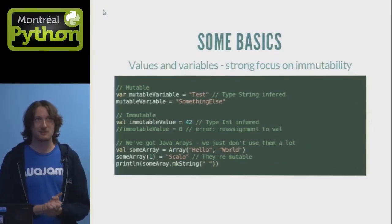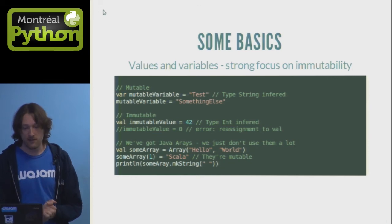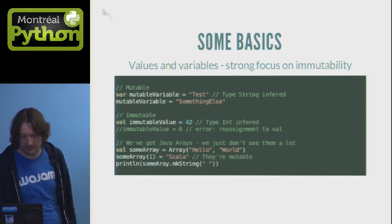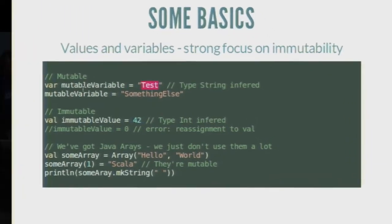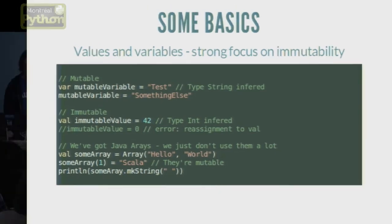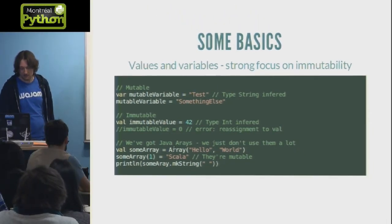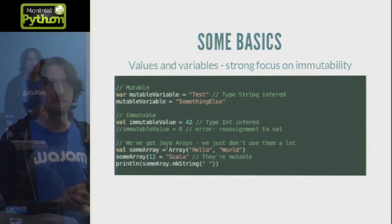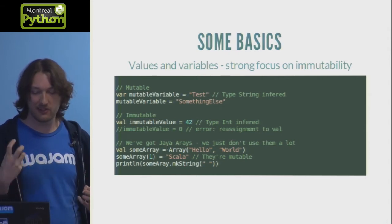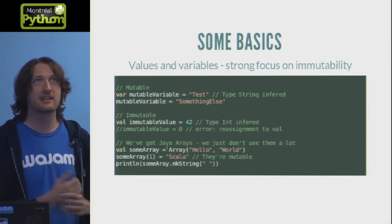Starting with some basic stuff — values and variables. There are two kinds of variables in Scala. There are mutable variables, where you can assign another value at any time and the state can always change. You've also got vals that are immutable — once you assign a value, it will never change. As you can see, the types are inferred by the compiler, so I'm not specifying whether a variable is a string or int. I've also put a demo of a Java array, but in Scala we don't really use arrays because they're mostly mutable and you don't have full control over the array content.